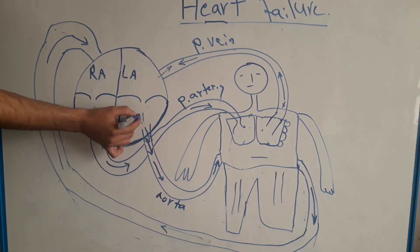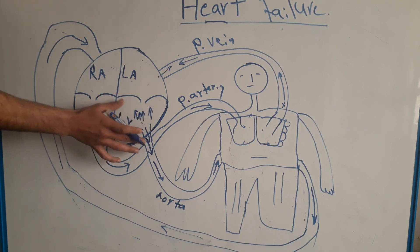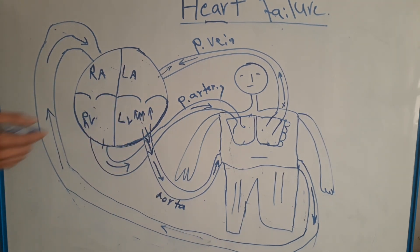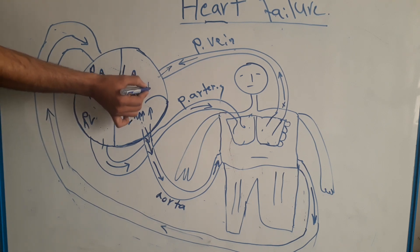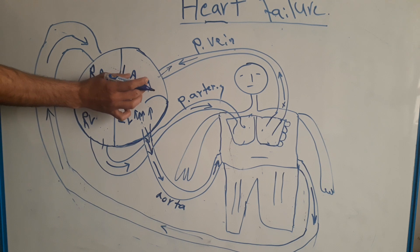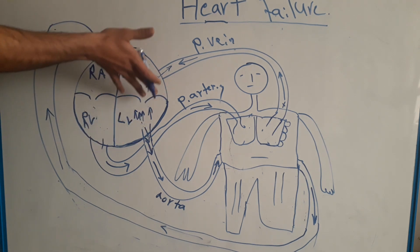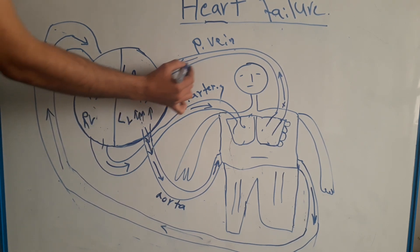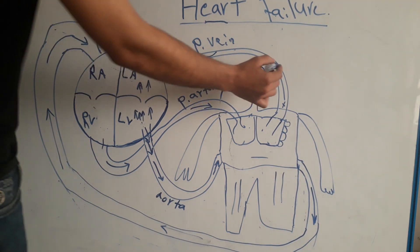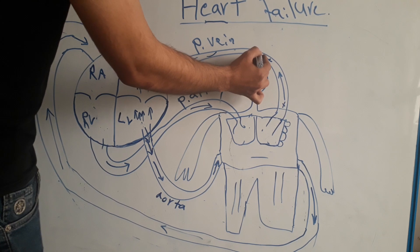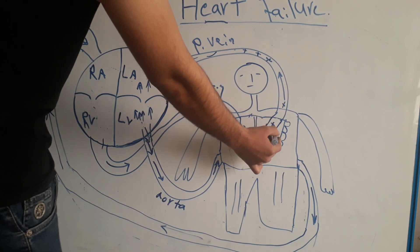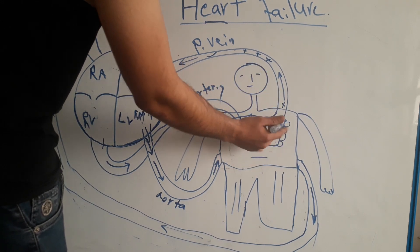Not enough blood is going to the aorta, so pressure increases inside the left ventricle. That increased pressure inside the left ventricle causes increased pressure inside the left atrium as well, because the left atrium cannot pump enough blood into the left ventricle. This leads to increased hydrostatic pressure inside the pulmonary veins.